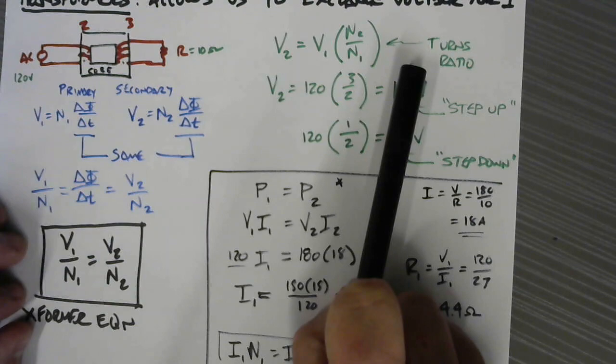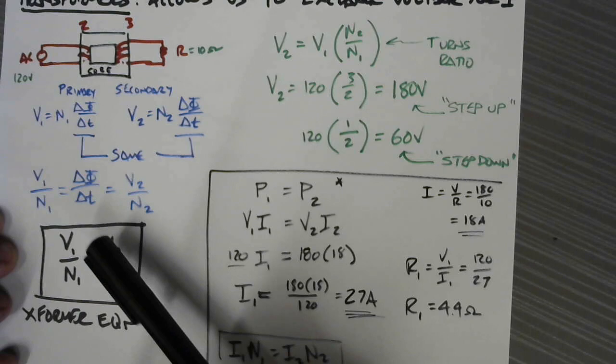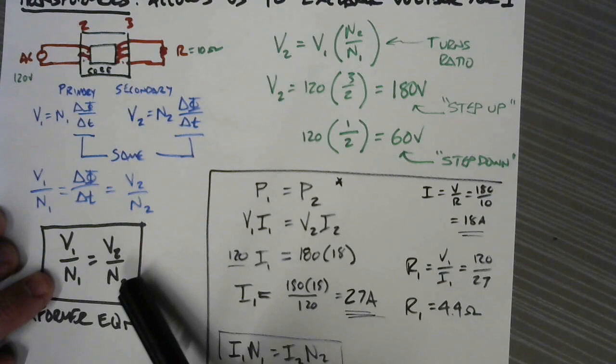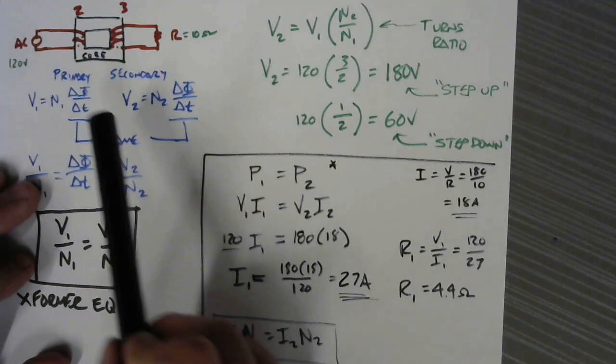If the number of wraps is different, you're going to get a turns ratio which will tell you whether it's a step-up or a step-down transformer. The transformer equation says that the voltage steps up or steps down in proportion to the ratio of the number of windings, and the current does the opposite. Now in practice, no one would build a transformer like this - there is too much of a chance that some of your magnetic field will actually leak out of the iron.